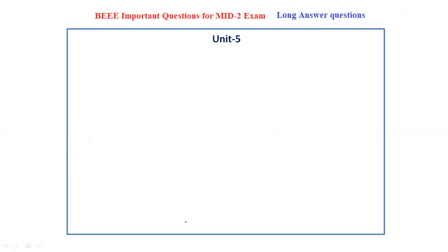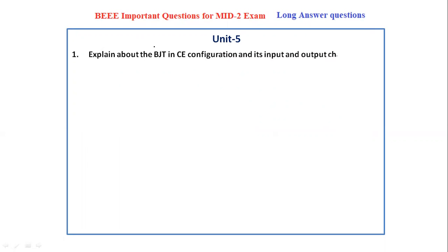Now let's talk about unit 5 long answer questions in the BEEE subject. Explain about the BJT in common emitter configuration and its input and output characteristics. You have to explain what is BJT, what is common emitter configuration with the circuit diagram, and then the input and output equations and input and output characteristics.